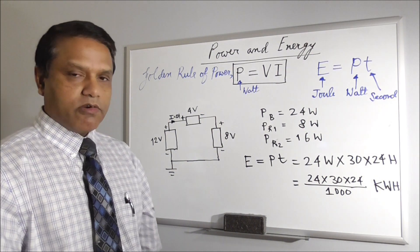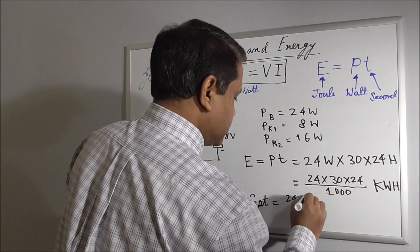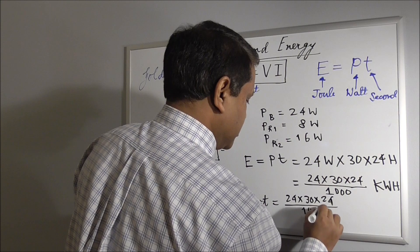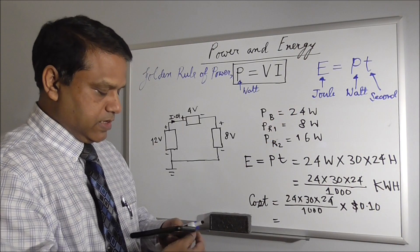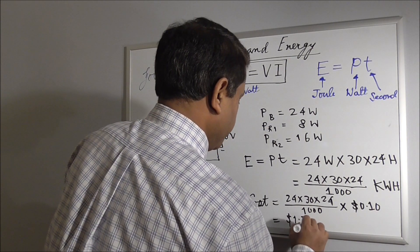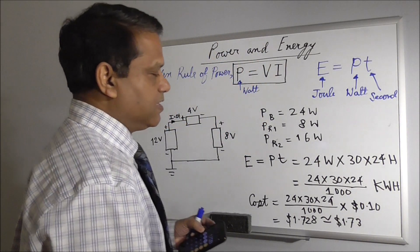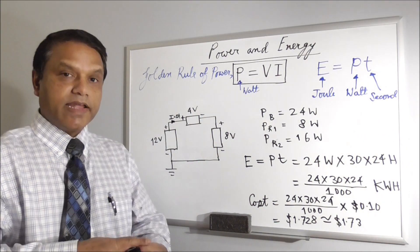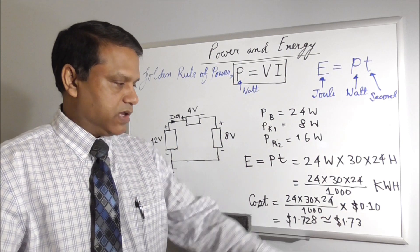And suppose each kilowatt hour costs 10 cents. That means its battery has supplied energy which costs this 24 times 30 times 24 divided by 1,000, and each kilowatt hour costs 10 cents, a dime. So it becomes dollar 1.728. So if this battery supplies power to these two resistors which could be two light bulbs for a month, and if each kilowatt hour costs 10 cents, by the end of the month whoever gives you the battery should charge you this amount of money. This is how to calculate energy.